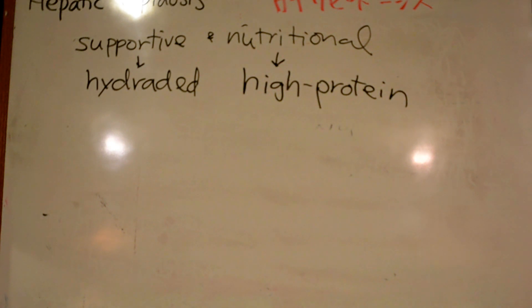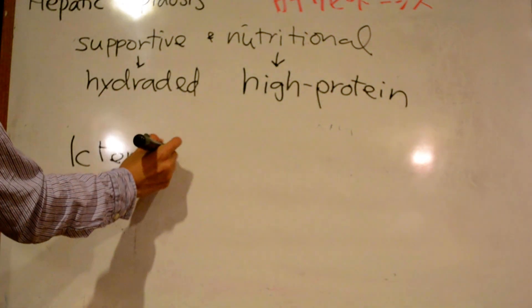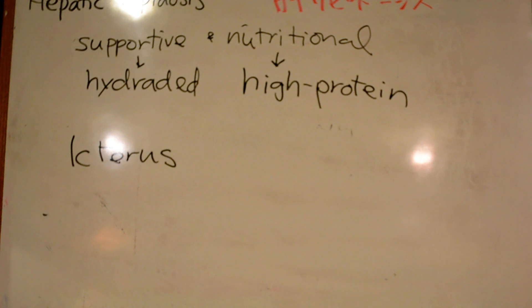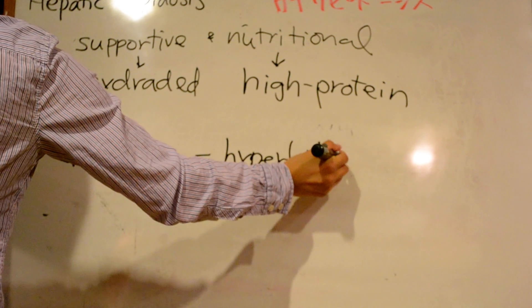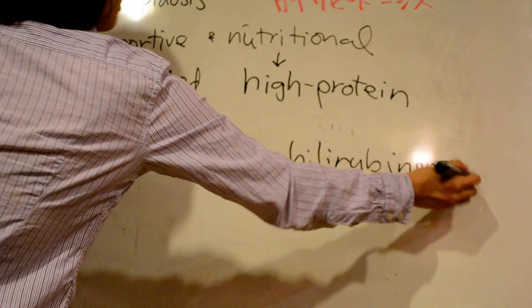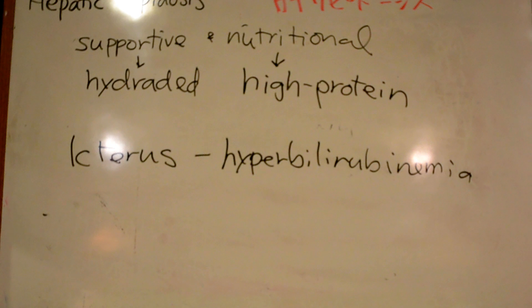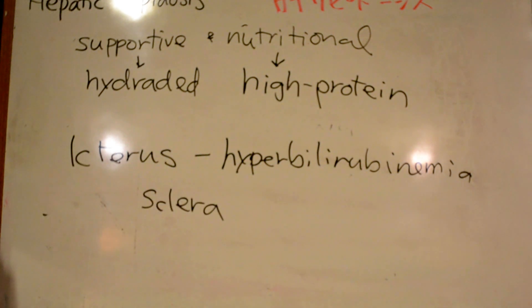Something to remember about liver disease: icterus is the yellowing of the sclera, conjunctiva, skin, and mucous membranes due to hyperbilirubinemia.